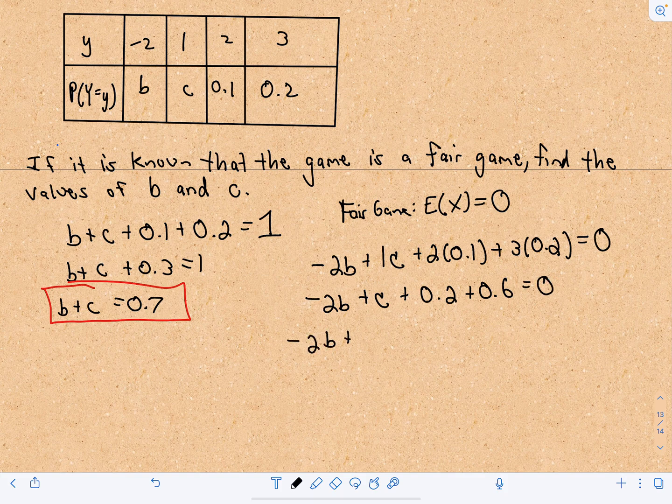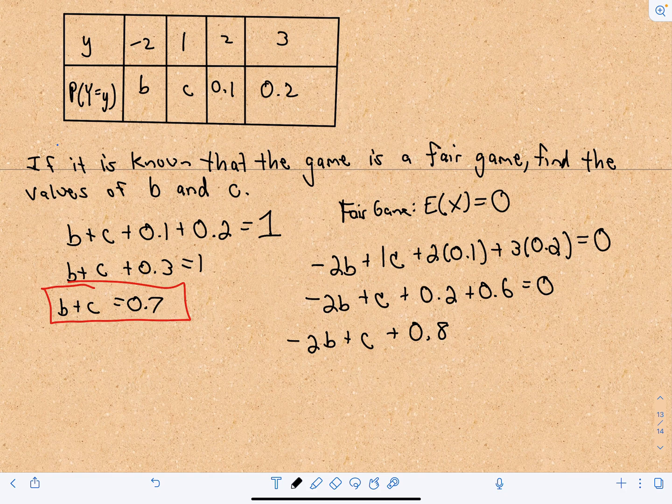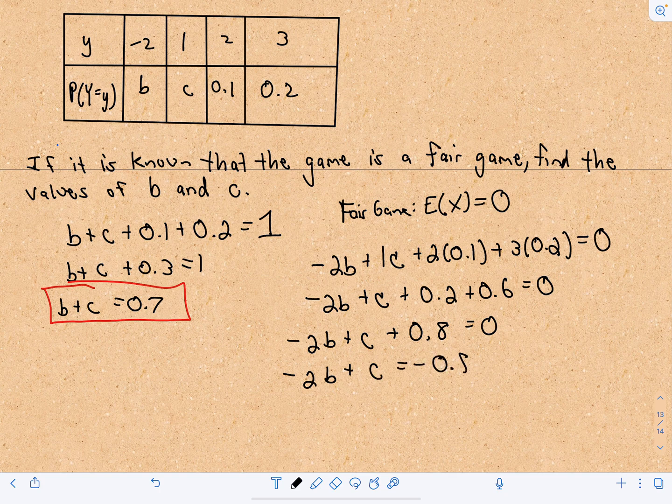So negative 2B plus C plus, if we add, that's going to be 0.8. That's going to equal 0. So negative 2B plus C, that's going to equal negative 0.8.